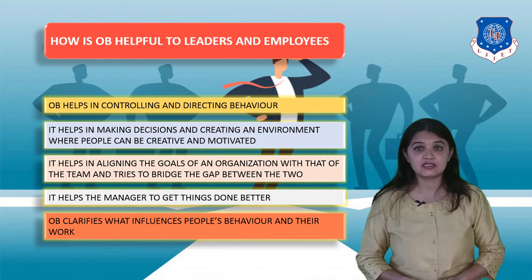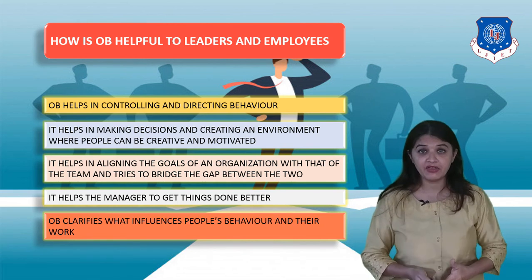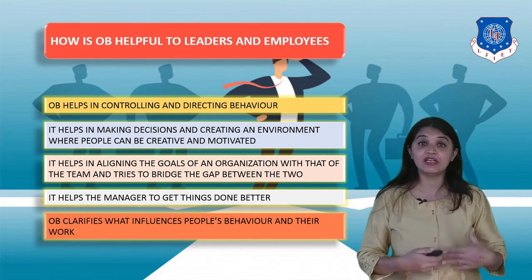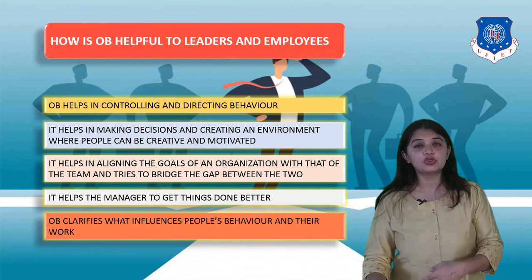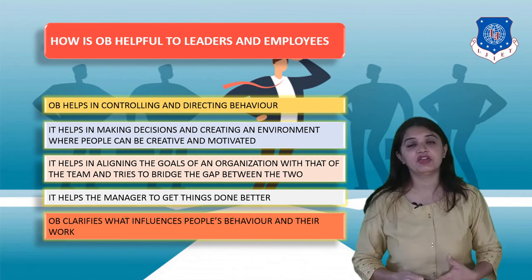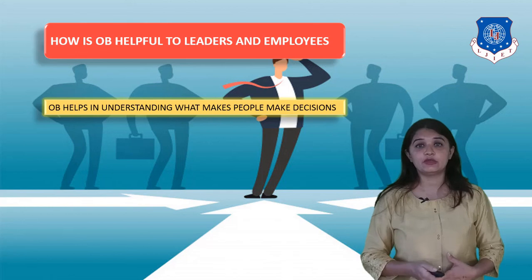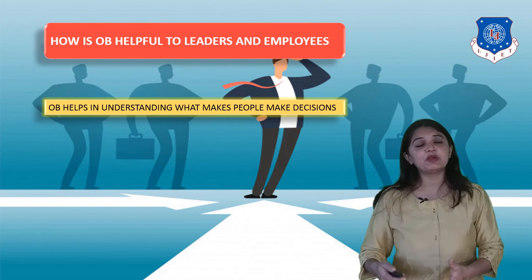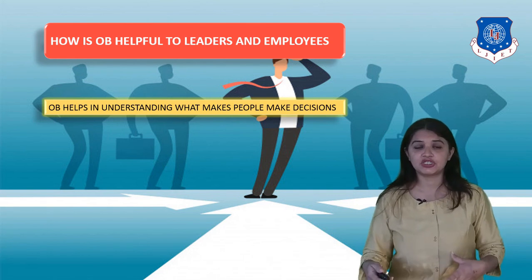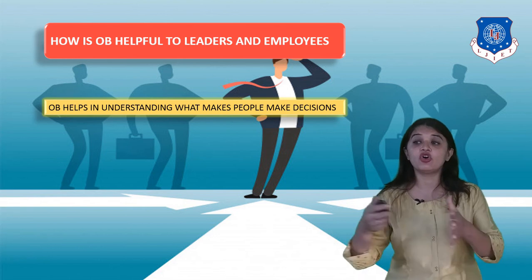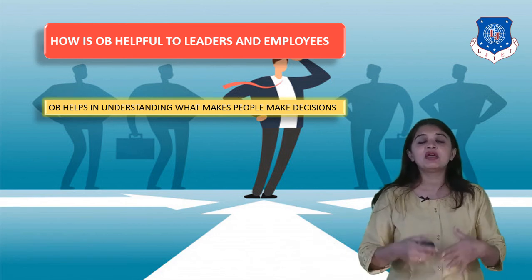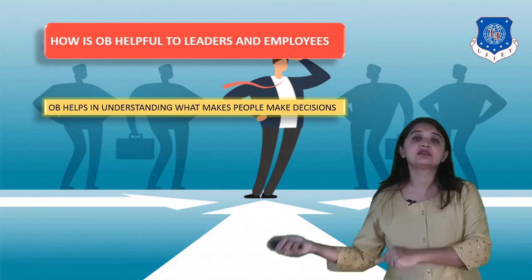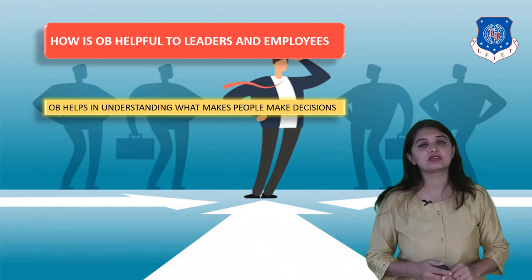OB clarifies what influences people's behavior and their work. If we know how people will behave and what will influence them, we can act accordingly so that they will work effectively. OB also helps in understanding what makes other people make decisions. Various people make decisions at different levels in the organization — personal decisions or organizational decisions — and both will affect the organization. If we understand what drives certain decisions, it will become easier for us to work with others.